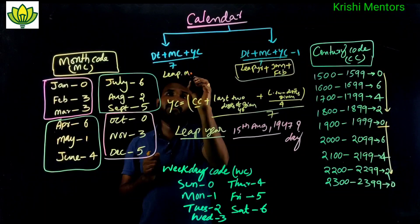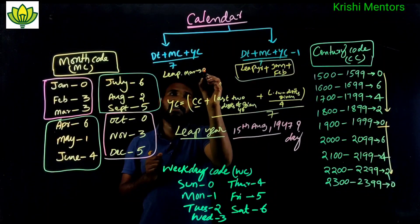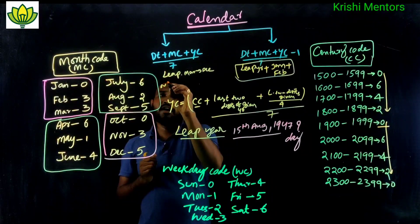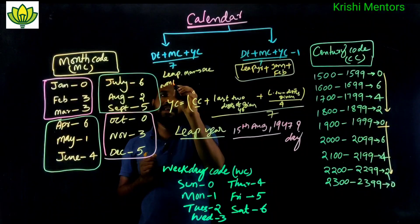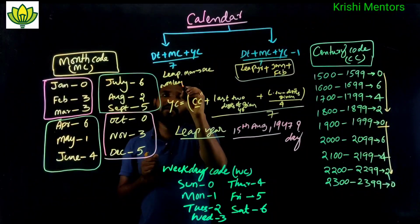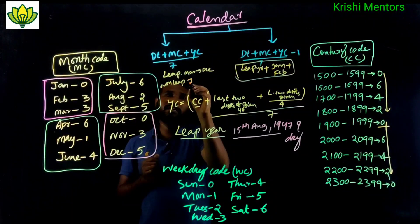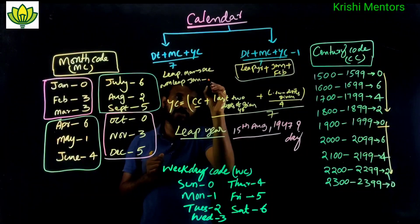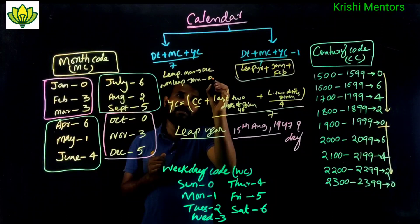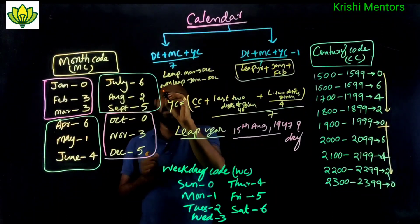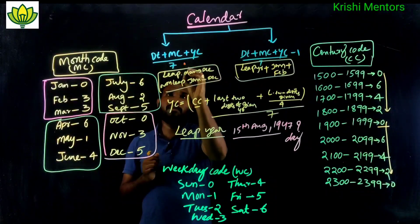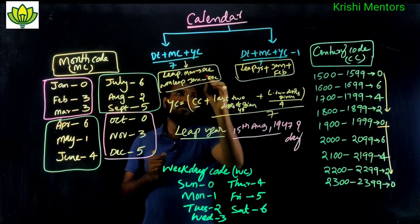For months March to December in a leap year, the standard formula applies. For January and February in a leap year, a special adjustment is needed.